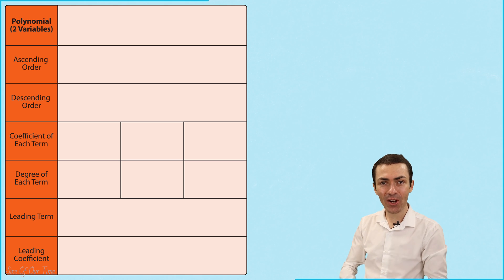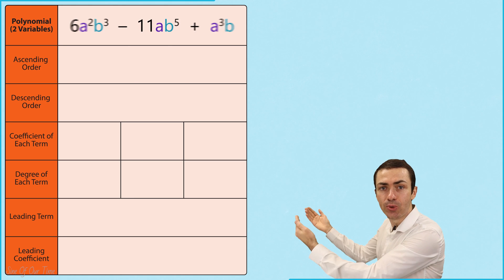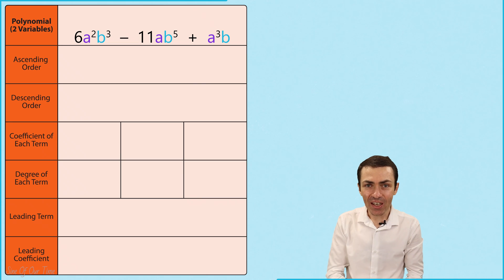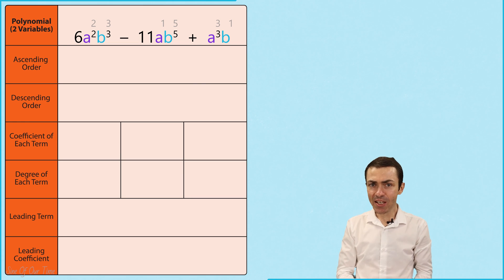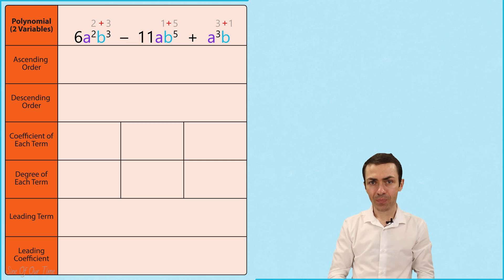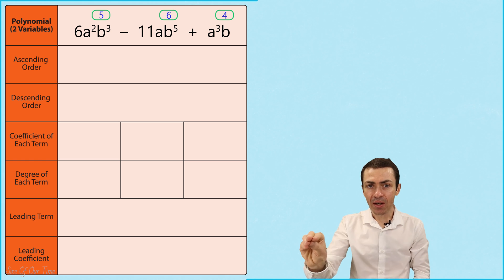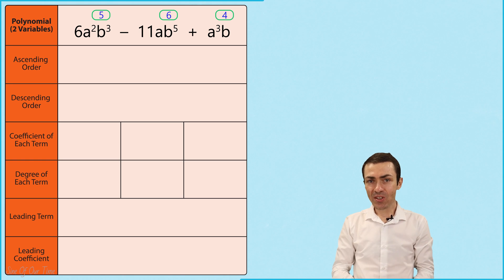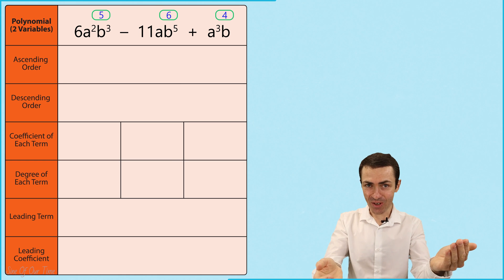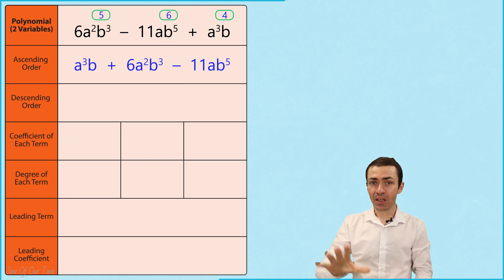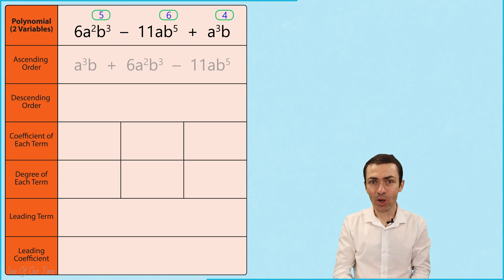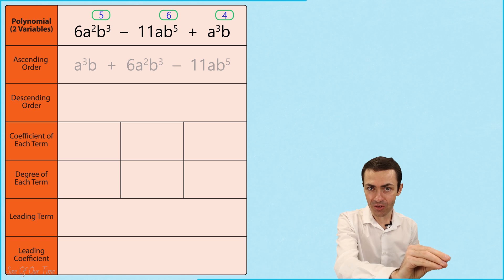Next, let's consider a polynomial that contains two different variables. If this is the case, to get the degree of each term, we simply add up the exponents of the variables of each term. If we are asked to write the polynomial in ascending order, we simply write the terms in order from the smallest degree to the highest degree. And if asked to write the polynomial in descending order, we do the exact opposite — we write the terms from the highest degree down to the lowest degree.